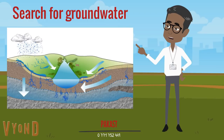Most of Uganda lies on igneous and metamorphic rocks of the crystalline basement — bedrock types include basalt, granite, quartzite, shale, and mudstone.